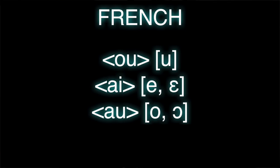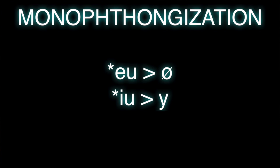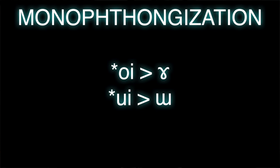Diphthongs become monophthongs all the time. You can usually see it in the spelling. In French, the way 'ou' is spelled — OU — was a diphthong that became a monophthong. Same with AI, which used to be a diphthong and then became the monophthong e. Same thing with AU, which used to be o and became o. You can also see things like the orthographic EU — that is, ü becoming u and ou becoming u.